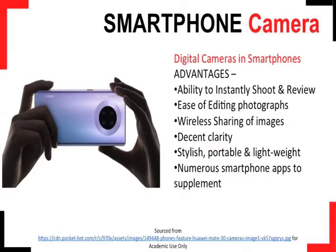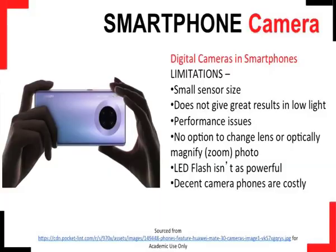The best thing about the mobile camera is the ability to instantly shoot, edit and share wirelessly any image that we take. Technological advancements over the years have helped them capture decent pictures with great clarity and quality. They are also lighter and sleeker, and are supplemented with numerous smart apps. However, the low-light performance is almost always a challenge for mobile cameras due to their small sensor size. They usually do not offer optical zoom, and though there is an option of digitally magnifying the image, it comes at a cost of pixelation. Camera phones offer LED flash, but it is far less effective than the flash of even a basic compact point and shoot camera. Also, any decent camera phone costs much higher than an average compact camera.